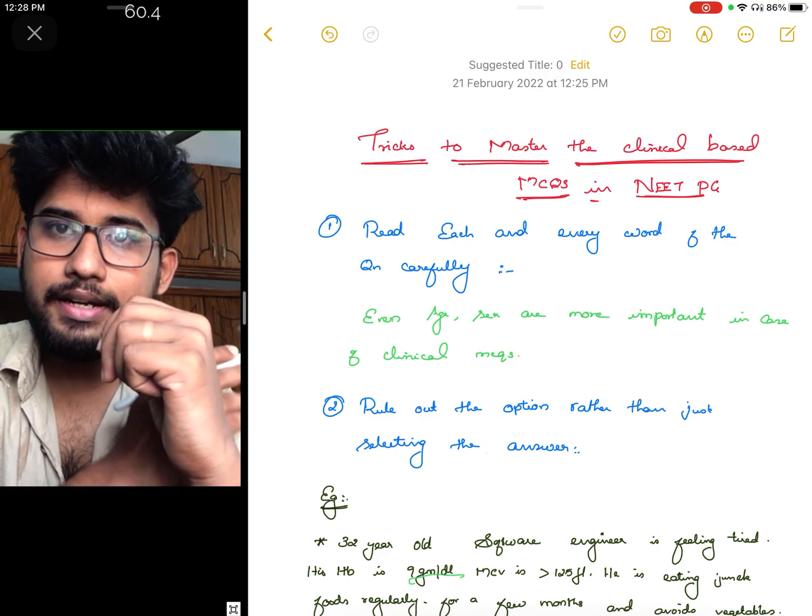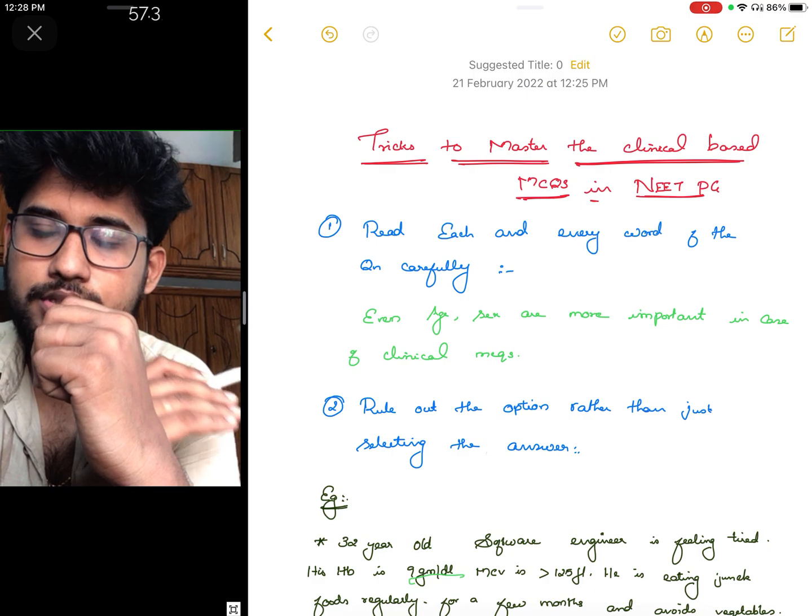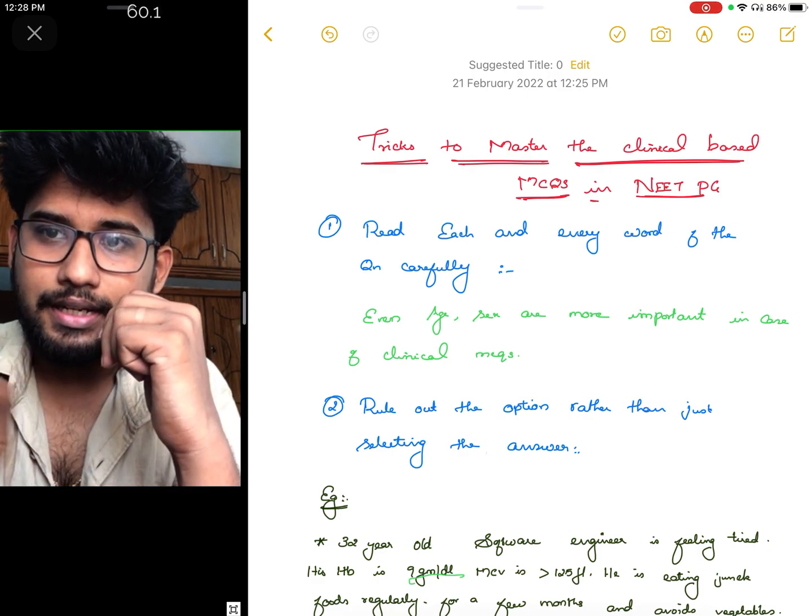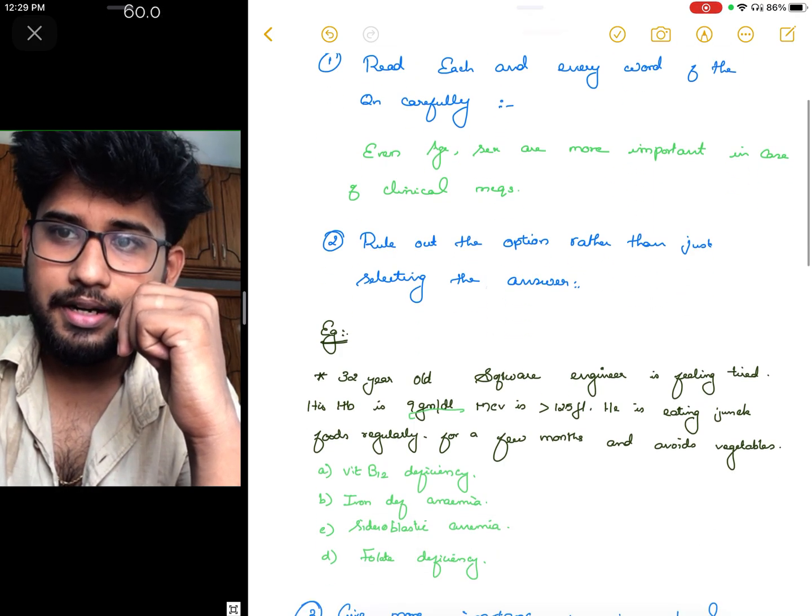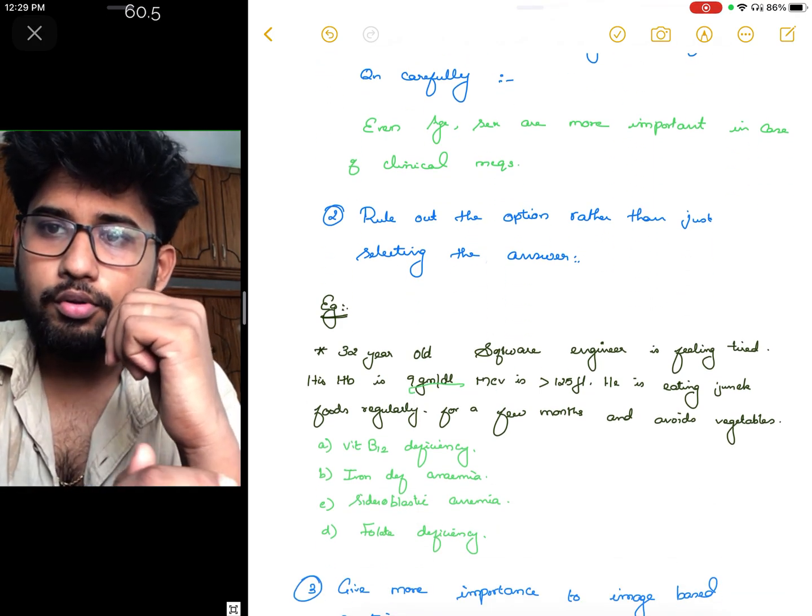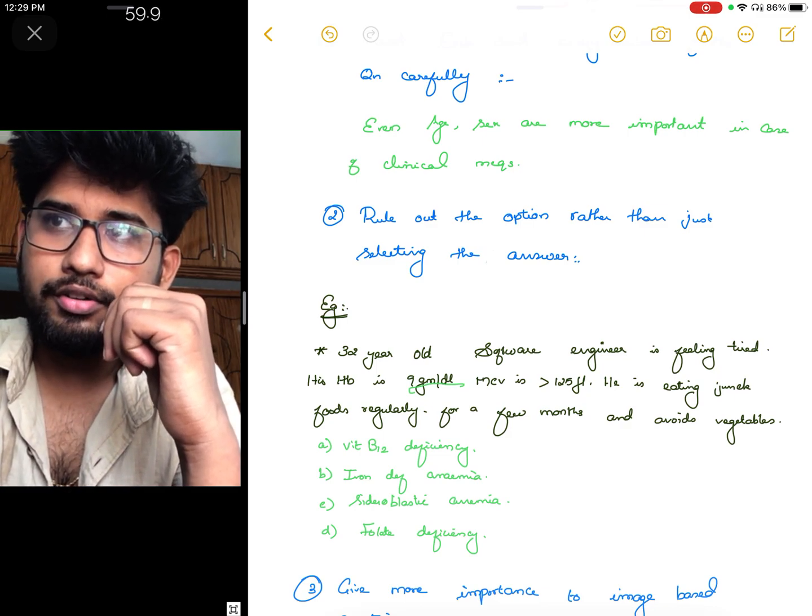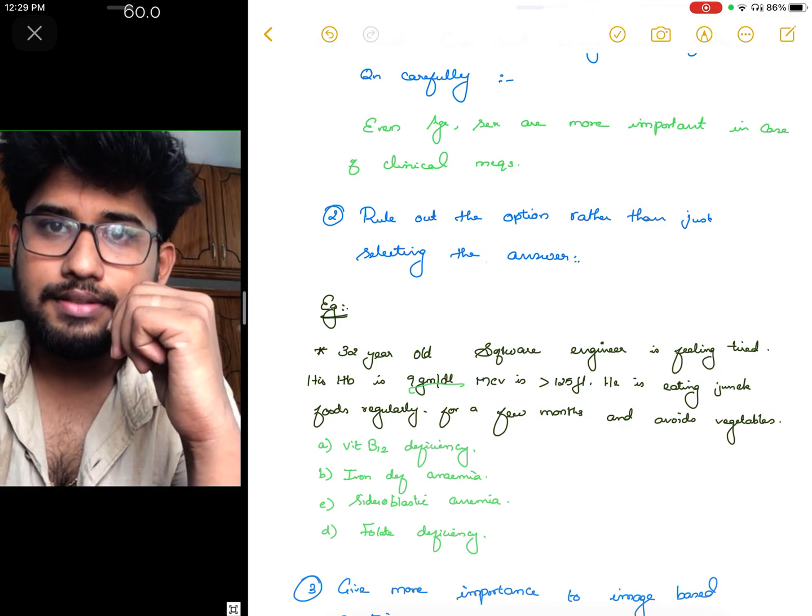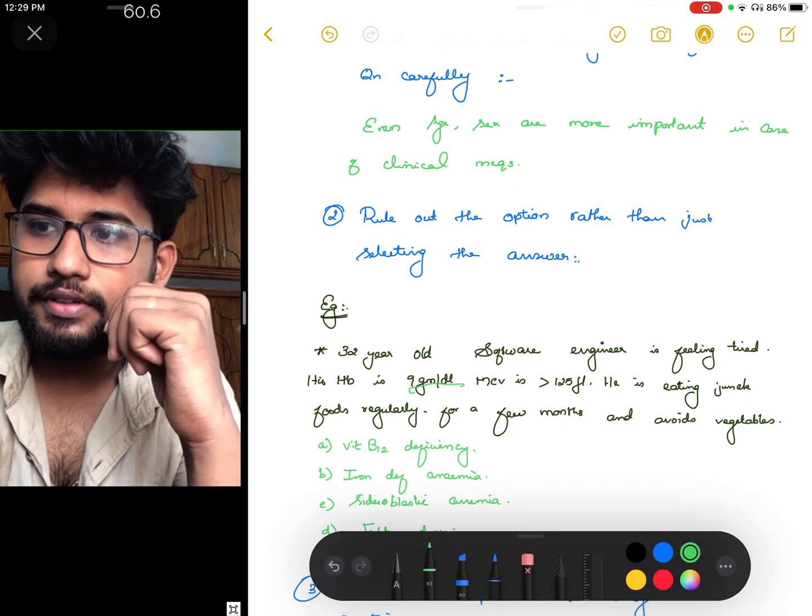Number two: rule out the options rather than just jumping into the answer. If you read a clinical-based MCQ, we have the tendency to just find out the answer and jump into the correct answer. Don't do this. Just try to rule out the other options, understand why other options can't be the right answer, and then find the correct answer.